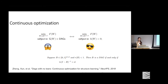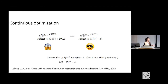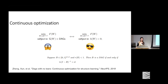More recently, researchers asked: can we convert the discrete graph search into a constrained continuous optimization? The NoTears method (2018) characterizes what it means to be a DAG via a trace constraint: if B is the adjacency matrix, the trace of the matrix exponential must equal the number of nodes. This allows the graph search to be solved with augmented Lagrangian methods, making score-based causal discovery significantly more scalable.